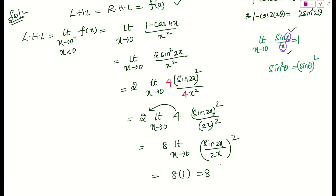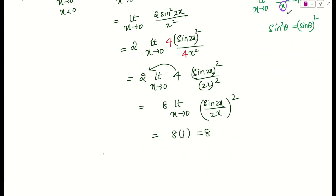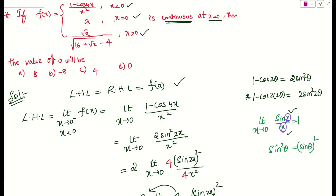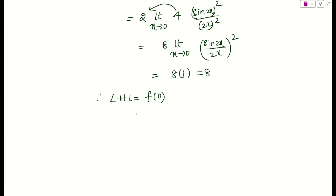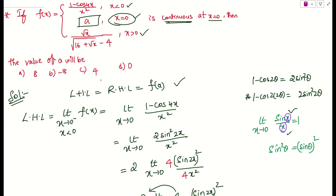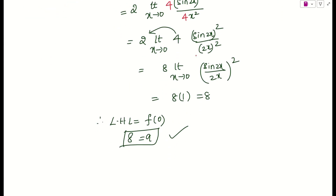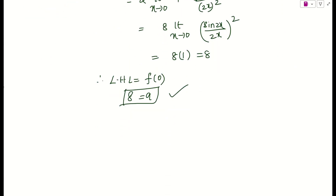Any doubts up to here? We can conclude that the left hand limit is 8. Now f(0) equals a according to the problem. So left hand limit equals 8, which means a = 8. But to be sure, since there could be an option like 'none of the above,' let us also do the right hand limit.